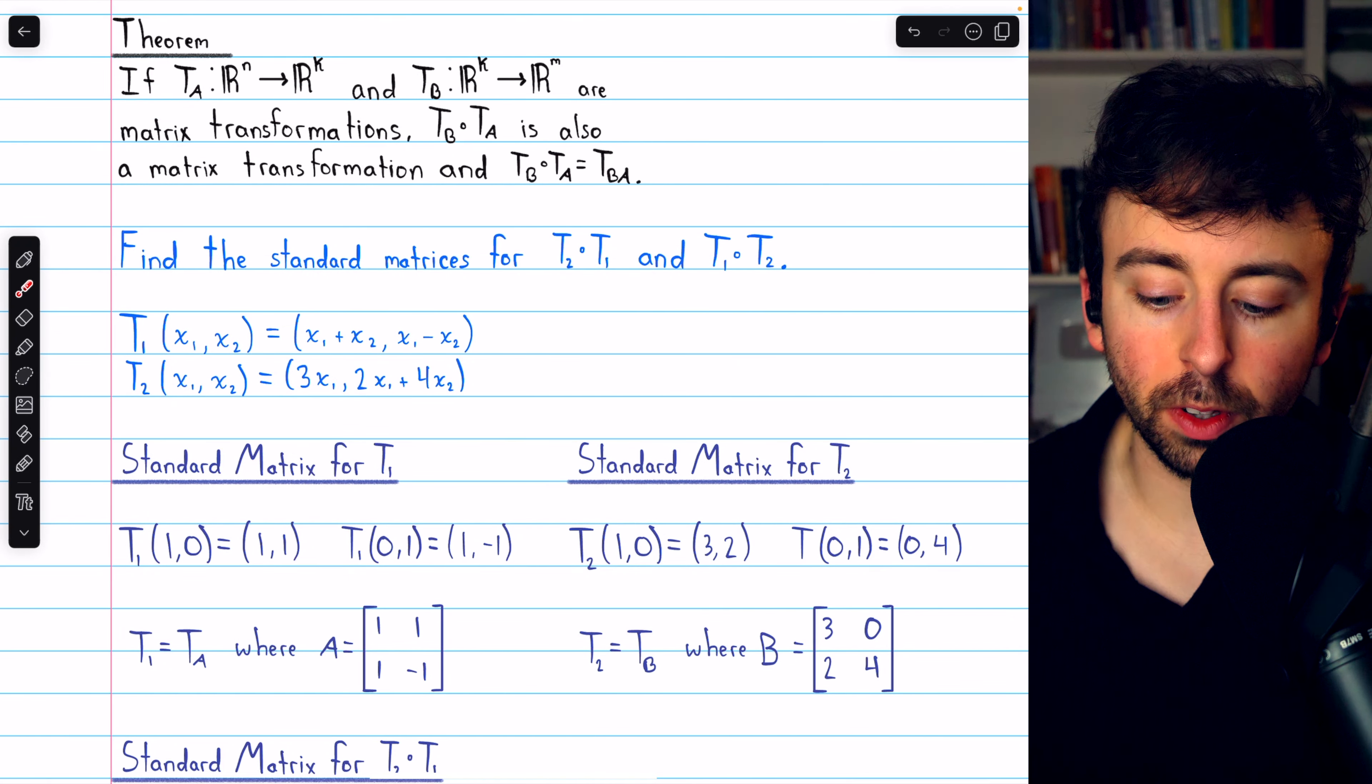So T2 circle T1 will have a standard matrix, which is the matrix for T2 multiplied by the matrix for T1.